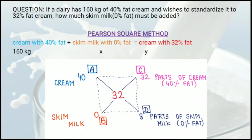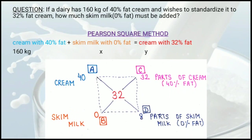These questions are solved by the Pearson Square Method. We have a cream with 40% fat, to which we add skim milk with 0% fat, to obtain a cream with 32% fat. The 40% fat cream is 160 kg; the amount of skim milk to add and the final amount of cream are both unknown.